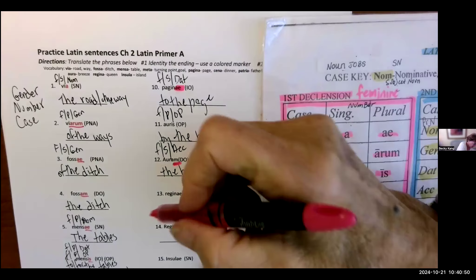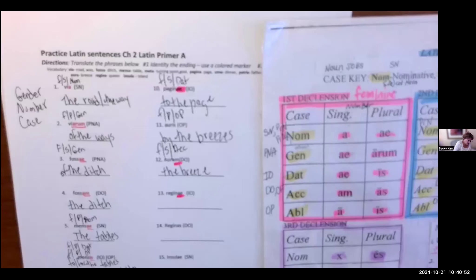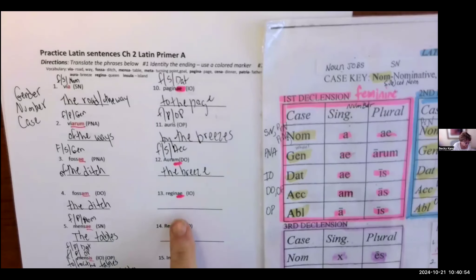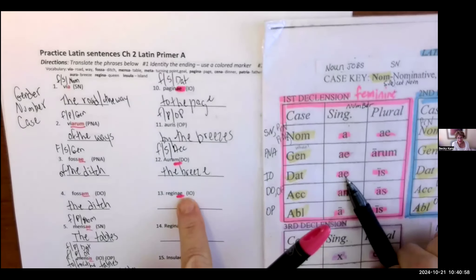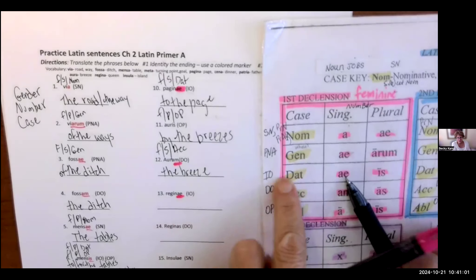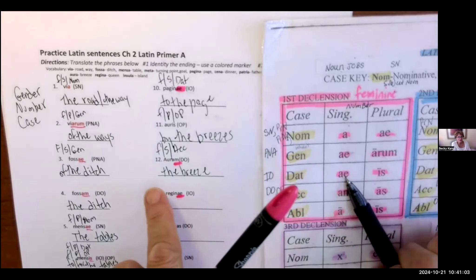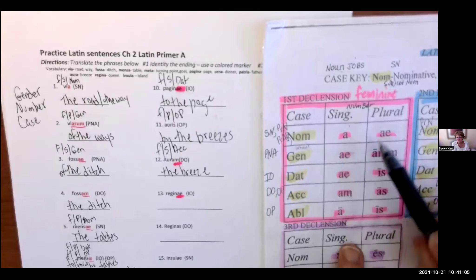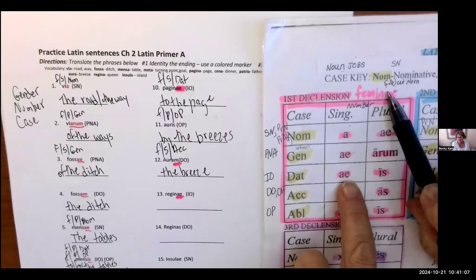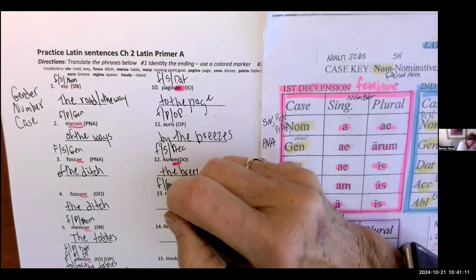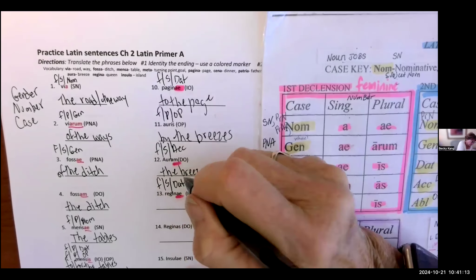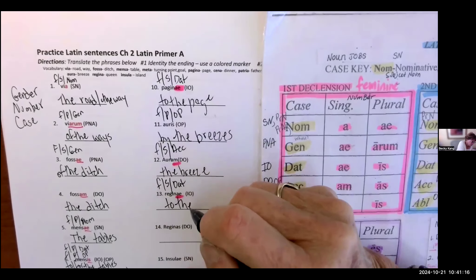This one, ae. And you know why I did this? Oh, there it is. See it? I said IO. IO is another word for dative. See that? Regina means queen. So it's feminine, singular, dative. And it means to the queen or for the queen.